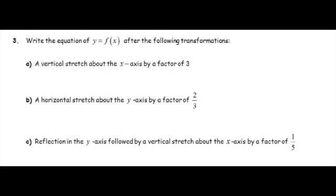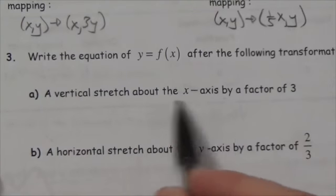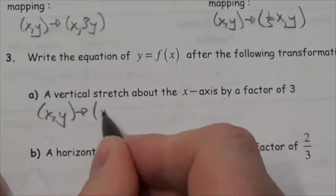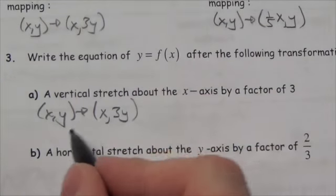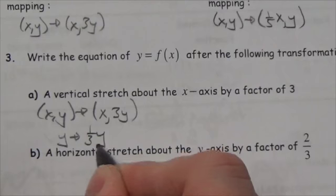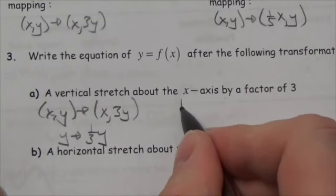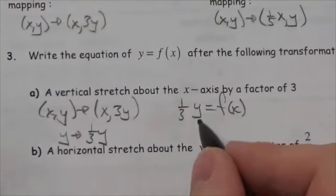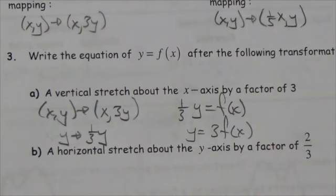Write the equation of y = f(x) after applying the following transformations. For a vertical stretch about the x-axis by a factor of 3: the image point is (x, 3y). In the function, I replace y with (1/3)y, giving (1/3)y = f(x). Bringing it to standard form: y = 3f(x).